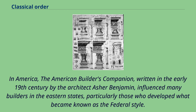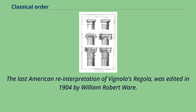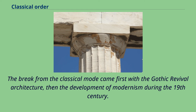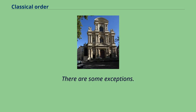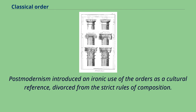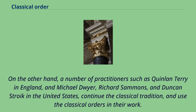In America, the American Builder's Companion, written in the early 19th century by architect Asher Benjamin, influenced many builders in the eastern states, particularly those who developed what became known as the Federal Style. The last American reinterpretation of Vignola's Regola was edited in 1904 by William Robert Ware. The break from the classical mode came first with the Gothic revival architecture, then the development of modernism during the 19th century. The Bauhaus promoted pure functionalism, stripped of superfluous ornament. Postmodernism introduced an ironic use of the orders as a cultural reference, divorced from strict rules of composition. Nevertheless, practitioners such as Quinlan Terry in England and Michael Dwyer, Richard Sammons, and Duncan Stroik in the United States continued the classical tradition and used the classical orders in their work.